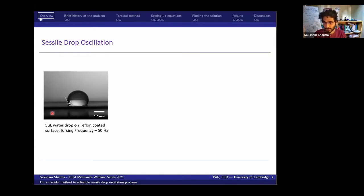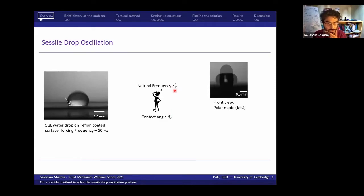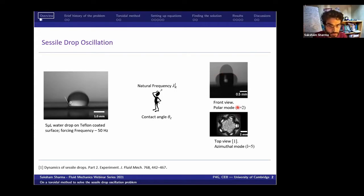Starting with the problem: we have a droplet placed on a surface, and as the surface oscillates normally upwards, the drop oscillates as well. The target of the project was to find a mathematical expression for the frequency of the drop and how it relates with the contact angle θc. The notation uses λ for dimensionless frequency, and k,l refer to the front mode and the top azimuthal mode — k is the number of nodes of the disturbed interface intersecting the equilibrium shape, and l is the number of azimuthal maxima.